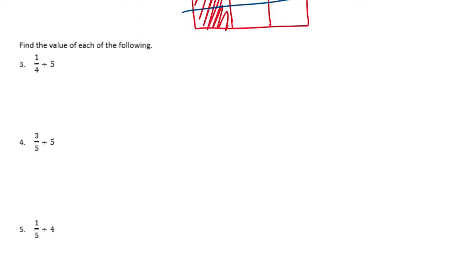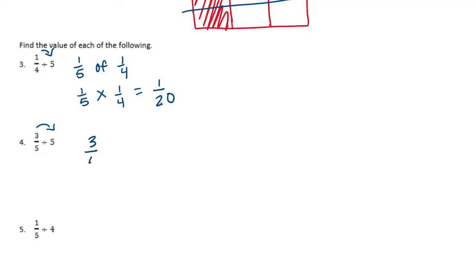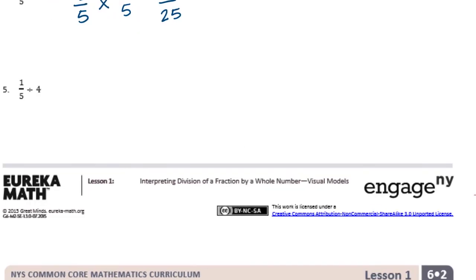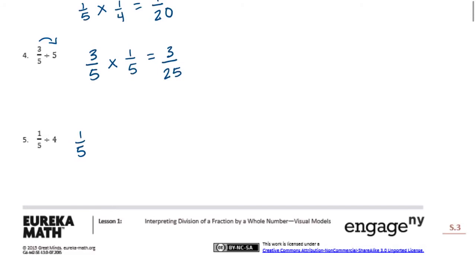Find the value of each of the following — no models needed, just turn them into multiplication problems. First: 1/4 divided by 5 becomes 1/5 times 1/4, which equals 1/20. Next: 3/5 divided by 5 becomes 3/5 times 1/5, which equals 3/25. Last: 1/5 divided by 4 becomes 1/5 times 1/4, which equals 1/20.